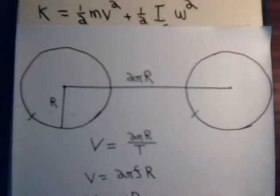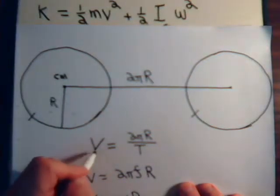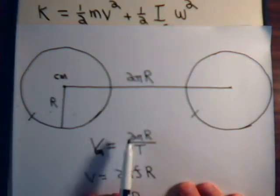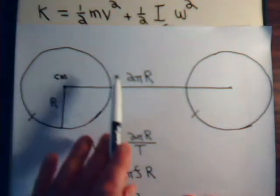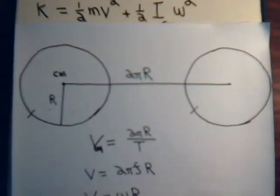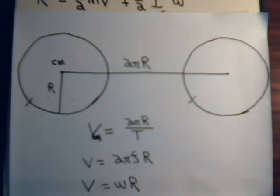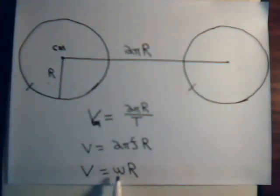The velocity of the center of mass is that distance, 2πr, divided by the time. For the disk to roll 360 degrees, the time it takes is the period, capital T. The reciprocal of the period is the frequency, and from physics, 2π times the frequency is the angular velocity, omega.